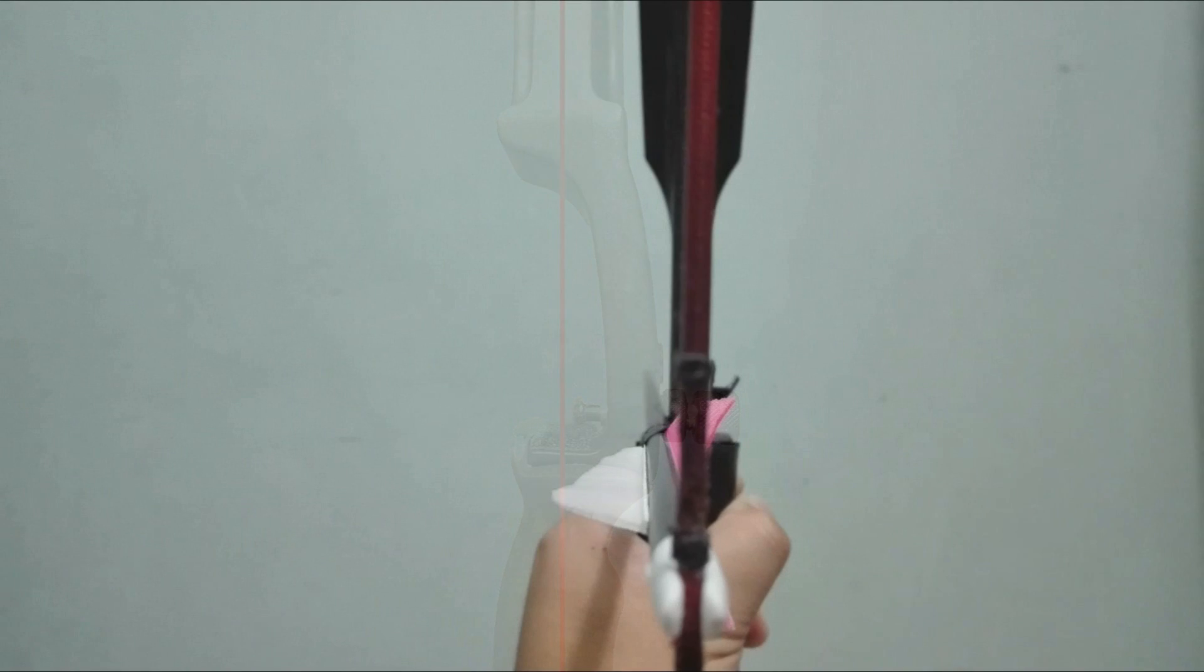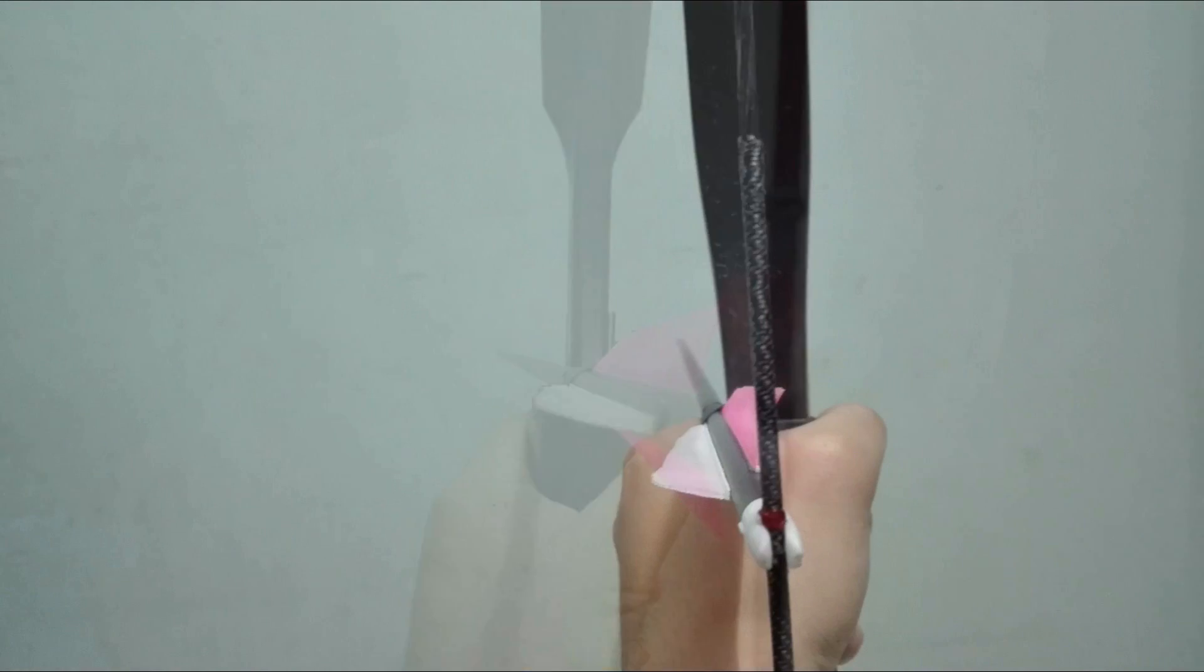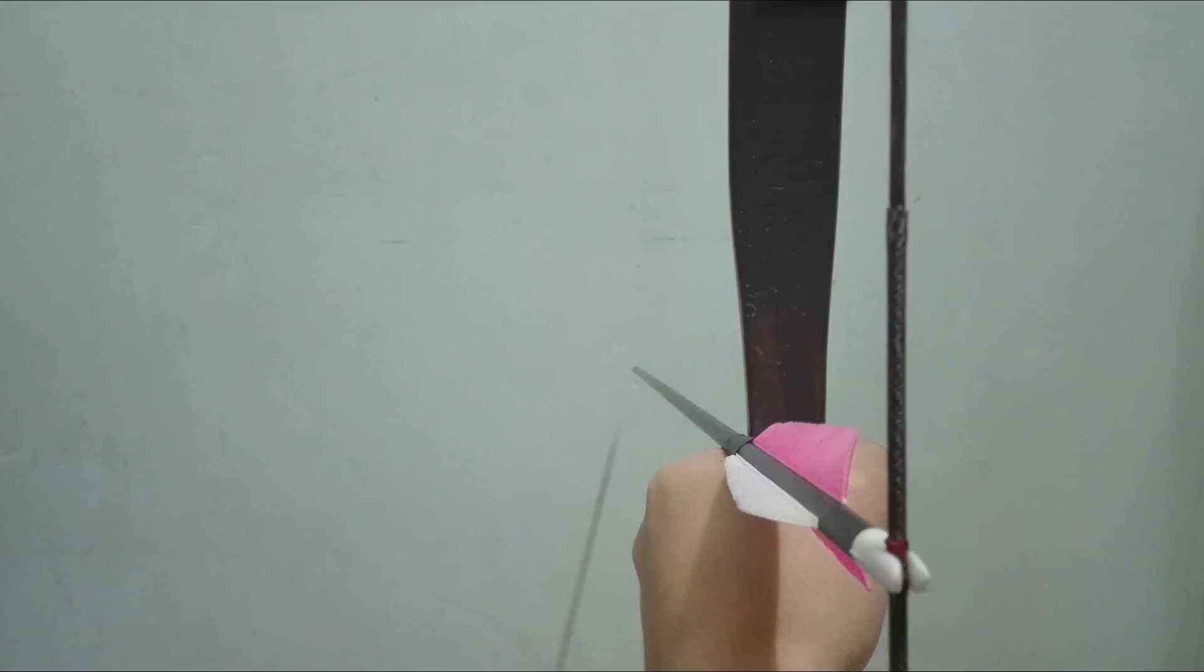Here's the bow that's not cut to center. It's clear that it is pointing to the side. Here's a horse bow without a shelf. Look at how drastic the angle is.